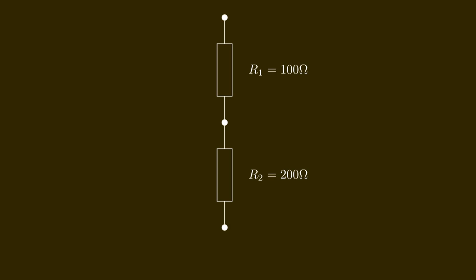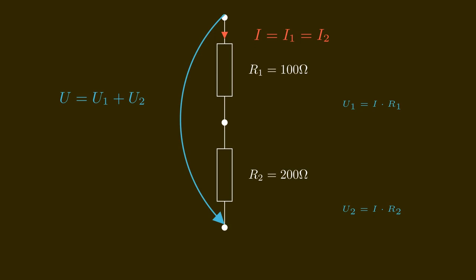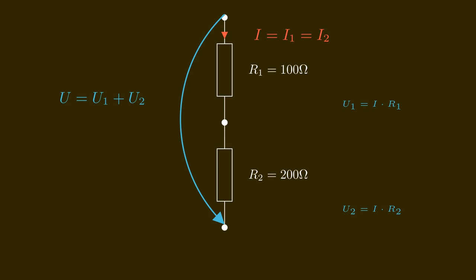What if we connect two resistors in series — back to back? Let's say the first resistor has R1 equals 100 ohms and the second one has R2 equals 200 ohms. From Kirchhoff's current law we know that the current going through both resistors is the same — we call it I, and I1 equals I2. We also know that the voltages add up: the total voltage is U1 plus U2. From this it is easy to see that the total resistance is the sum of the two individual resistors — in our case 100 plus 200 giving 300 ohms.